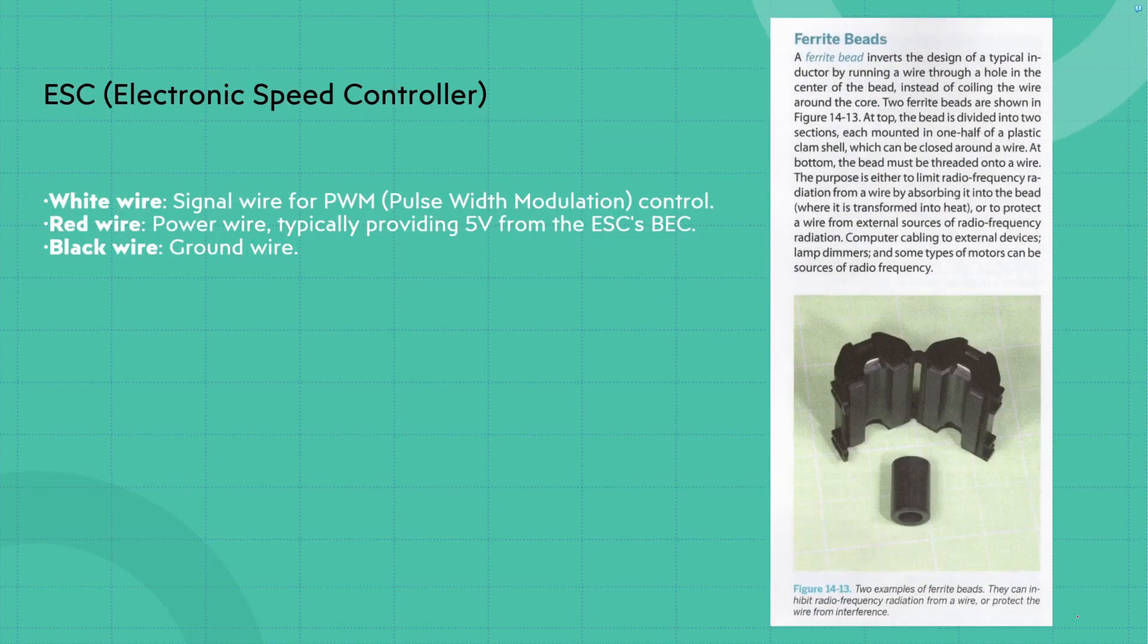Now, something else to keep in mind that you might actually see on some of your ESCs are these ferrite beads. At the bottom, the bead must be threaded onto a wire. The purpose is either to limit radio frequency radiation from a wire by absorbing it into the bead where it transforms into heat, or to protect a wire from external sources of radio frequency radiation. Computer cabling to external devices, lamps, dimmers, and some types of motors can be sources of radio frequency.